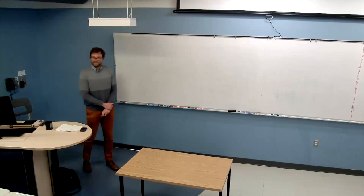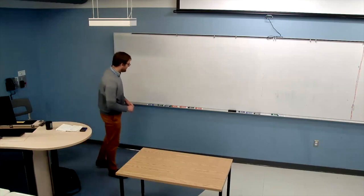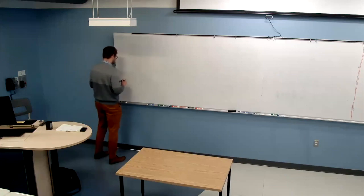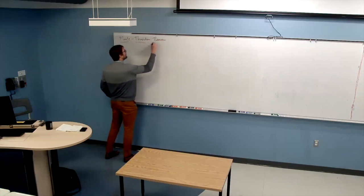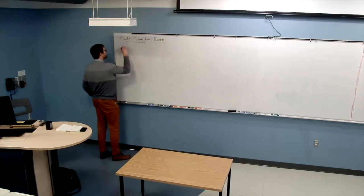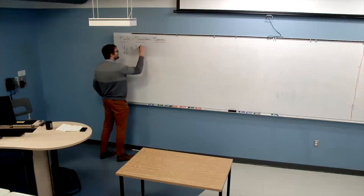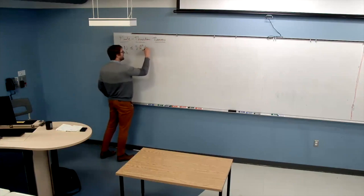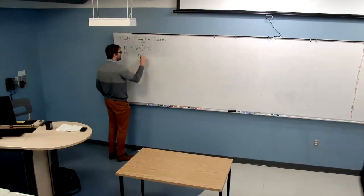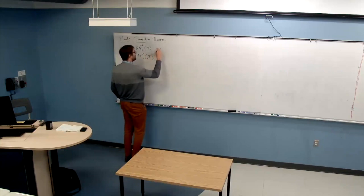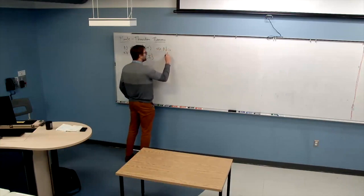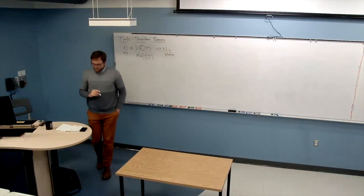Welcome back. Today we'll continue where I left off last time, which was with this five-star theorem. You can show that if M is either a circle or the interval, then the group is abelian.